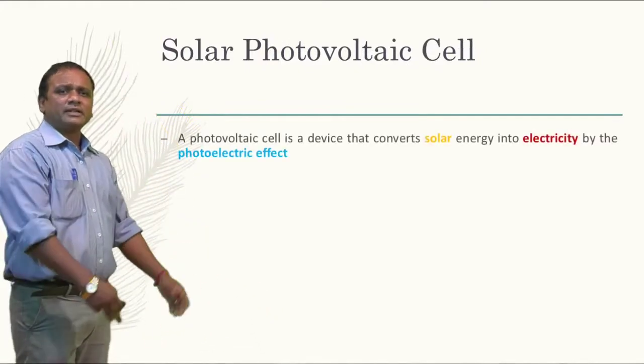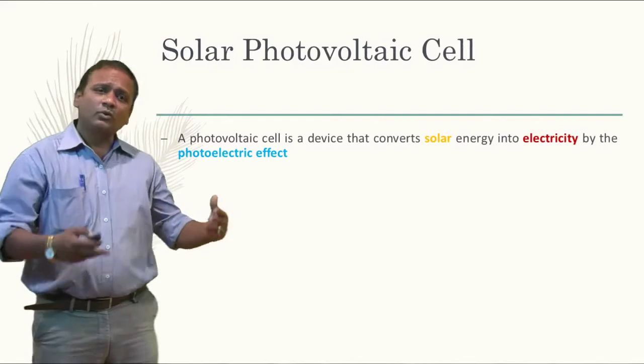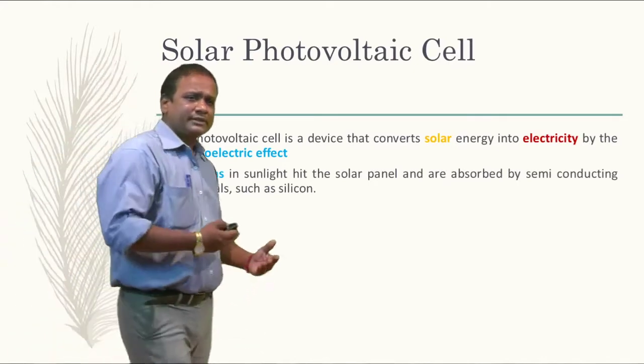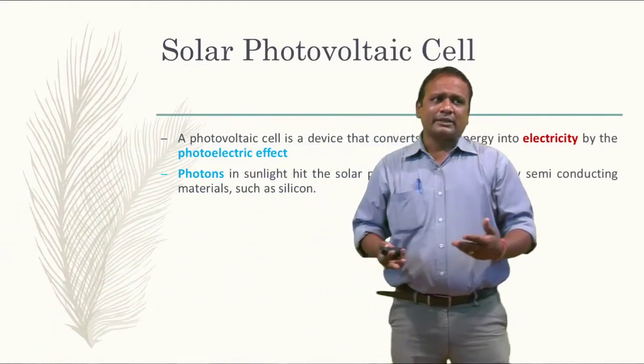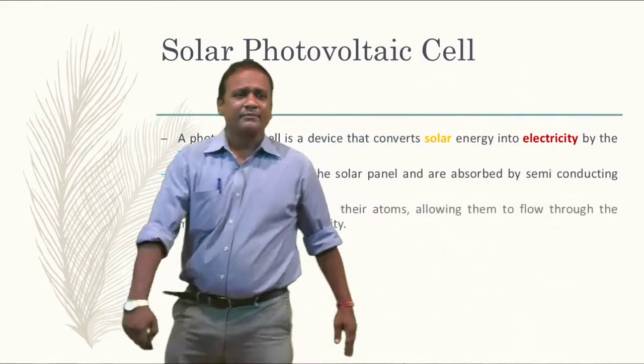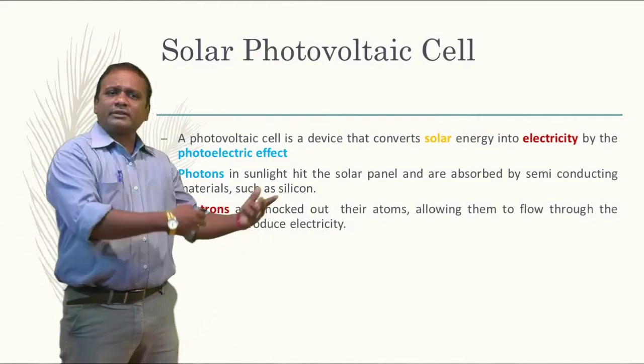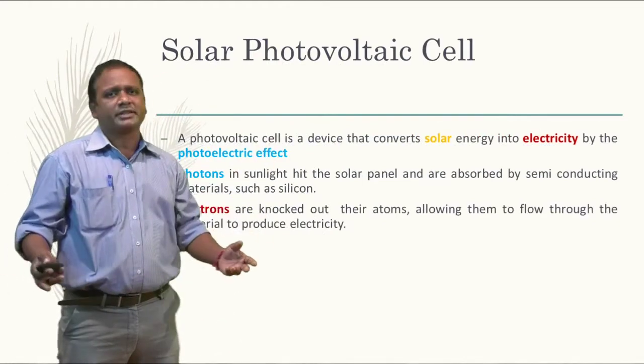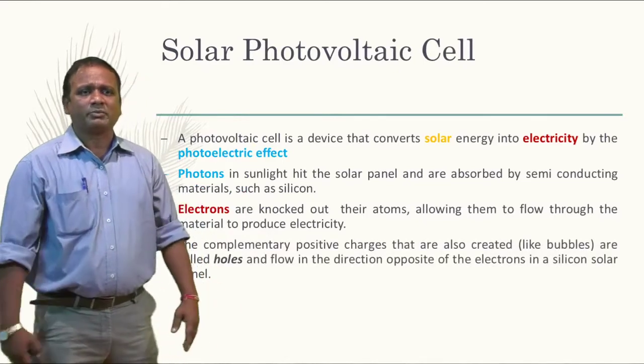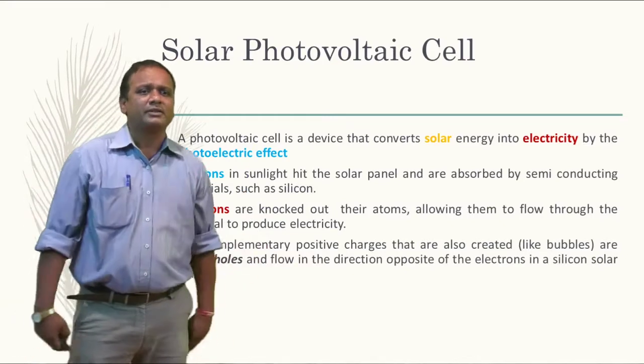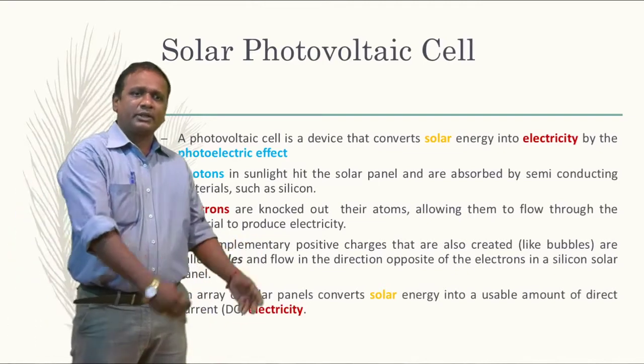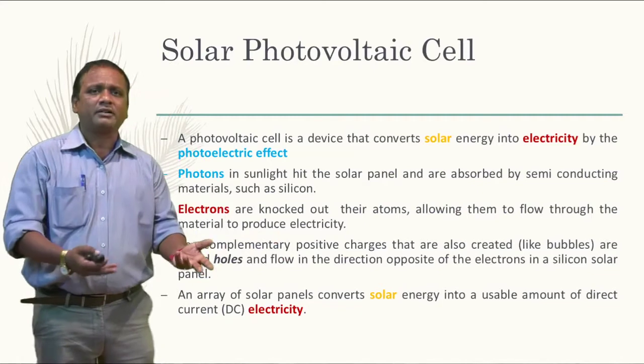Now, one by one, let me explain. A photovoltaic cell is a device which converts solar energy into electrical energy by the photoelectric effect. What is the photoelectric effect? The photons in the sunlight hit the solar panel that are absorbed by the semiconducting material, which is silicon. When the electrons are knocked out of their atoms, allowing them to flow through the circuit, electricity is produced. It's very simple. We also have complementary charges created, which are called holes, and they flow in the opposite direction in a silicon solar panel. An array of solar panels converts solar energy into a usable amount of electric current, which we call DC, direct current. DC is what we get from this energy.